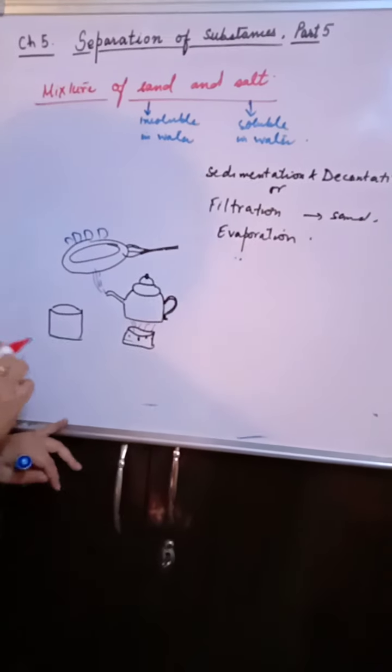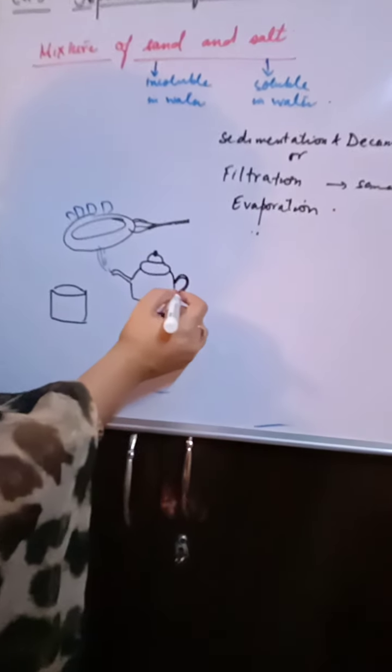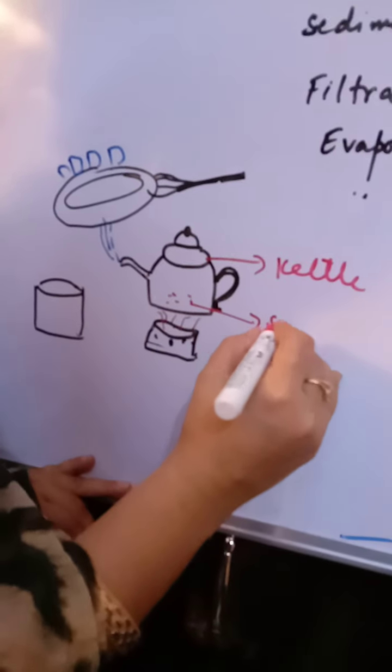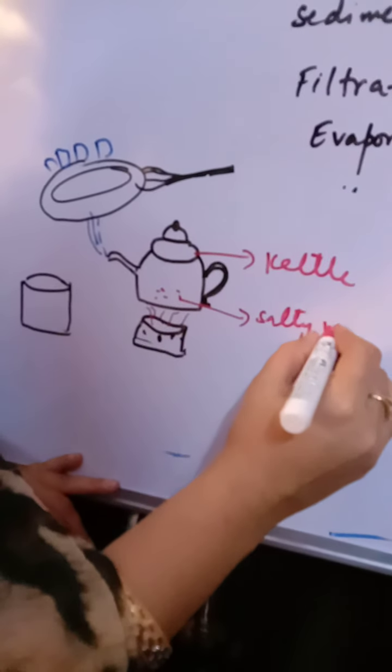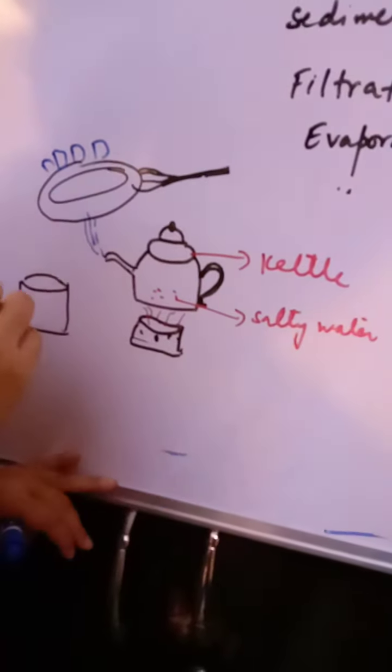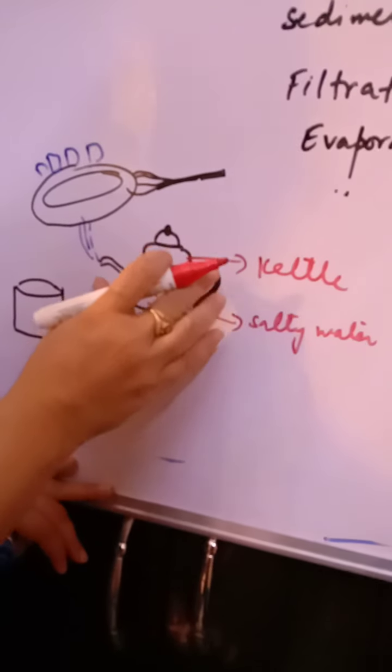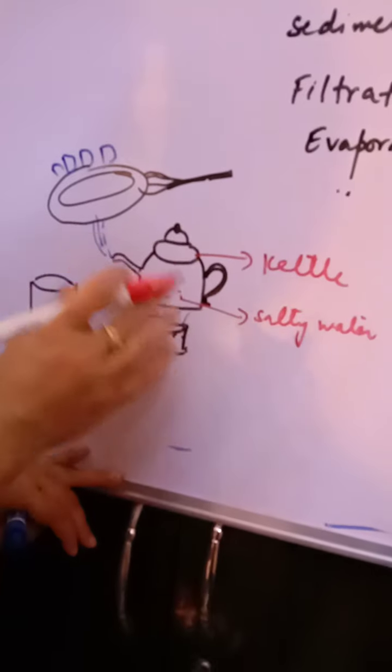This is a diagram in which I have taken a kettle. This kettle has that salty water which we were discussing. Now there is a burner, and you put the kettle on the burner.